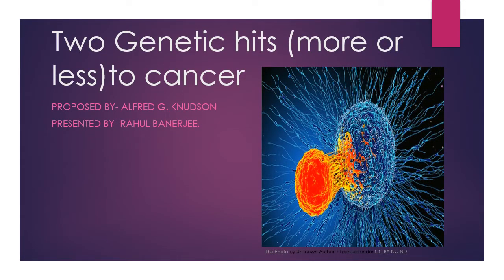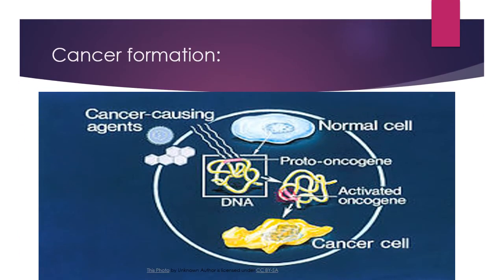This topic is about two genetic hits or more relating to cancer. Cancer is a disease caused when cells divide uncontrollably and spread into surrounding tissues. It is mainly caused by changes in the DNA sequence present in the nucleus, specifically within the chromosomes. Here is a picture showing cancer formation — cancer-causing agents can be internal or external.